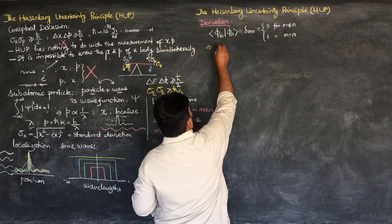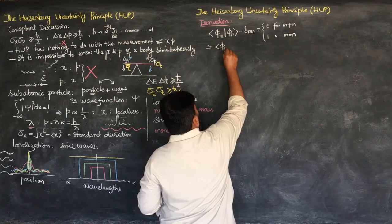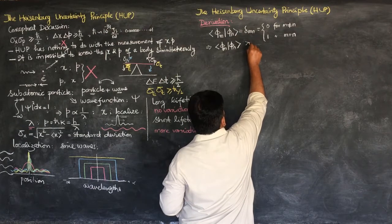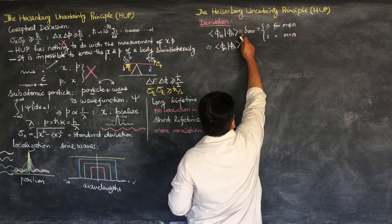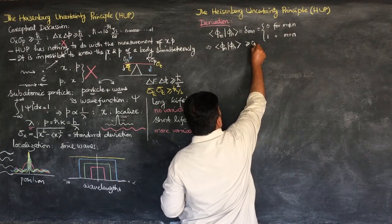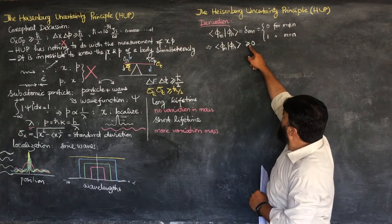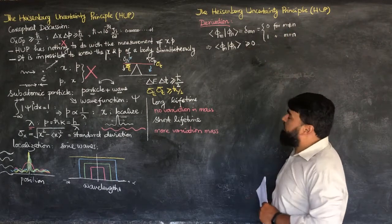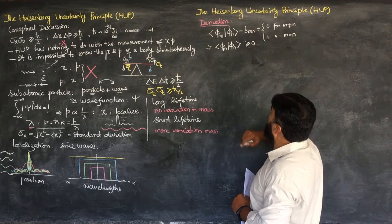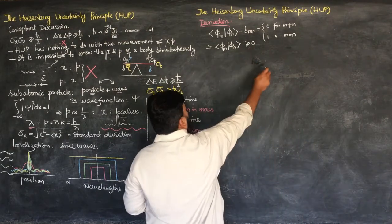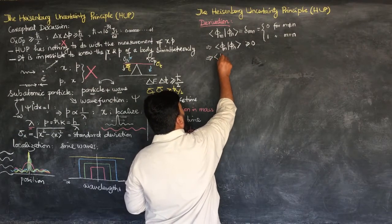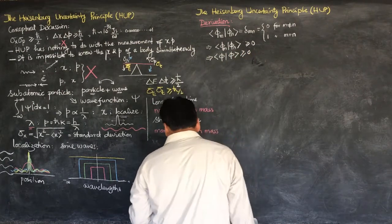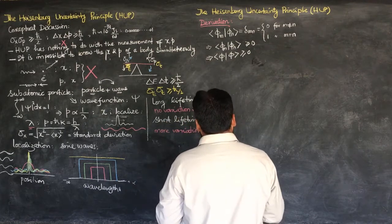This value fluctuates between 0 and 1. So I can write that ⟨φ|φ⟩ is greater than or equal to 0. The maximum value it can reach is 1. Removing the subscripts since we don't need them, we have ⟨φ|φ⟩ ≥ 0.